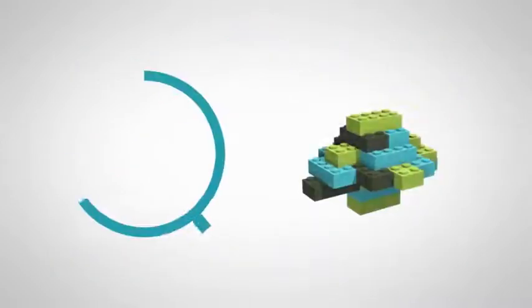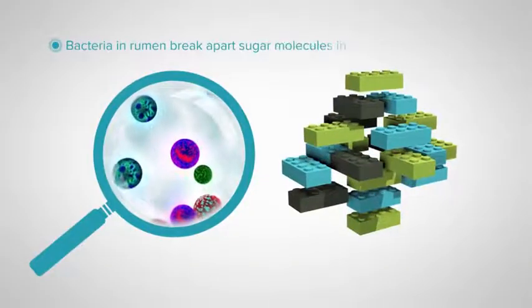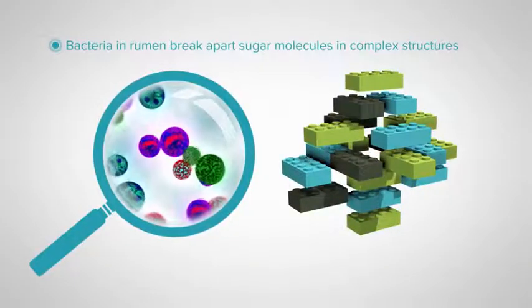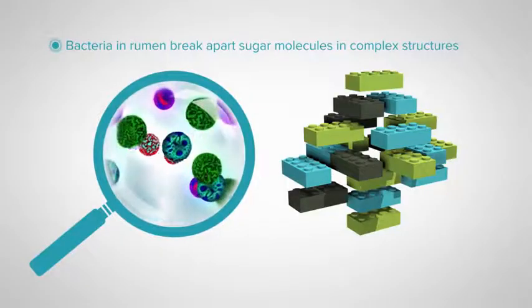Luckily, the bugs in the rumen are capable of breaking apart these complex structures, so the sugar molecules, or the Lego blocks, can be used by the bugs for energy.